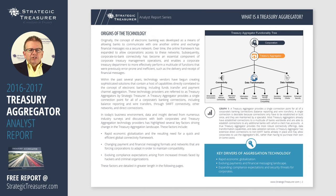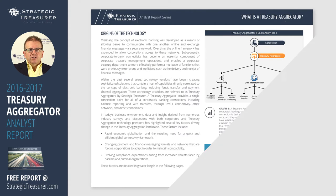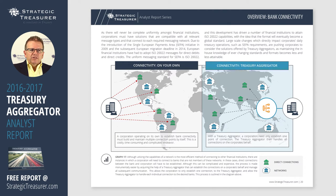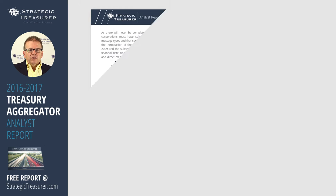So what do Treasury Aggregators offer? As you can see from this chart, there are different levels of connectivity, data transformation, and data validation. First, there's bank connectivity — connectivity through SWIFT or through other networks, direct host-to-host connections, and other types of networks such as EBICS, ACH, or in-country networks.